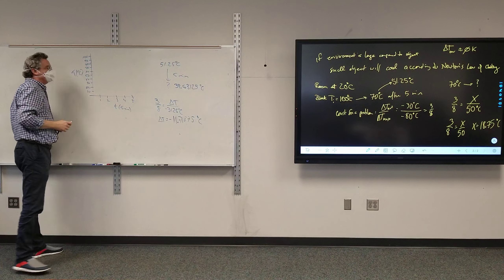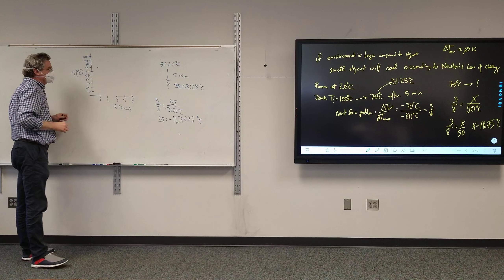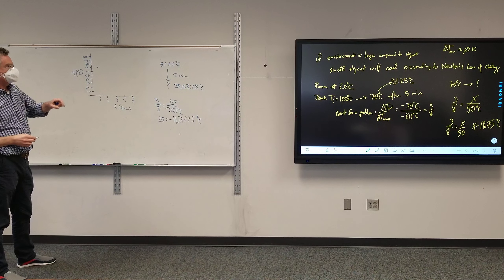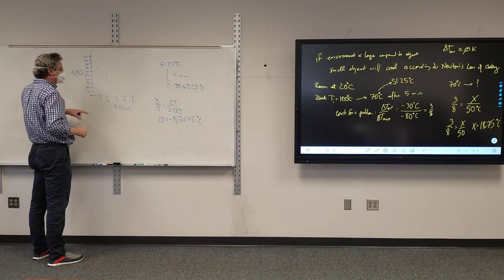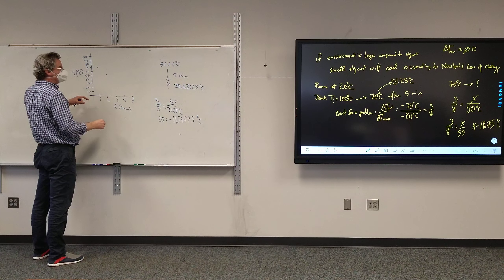All right, so my time is equal to zero, I'm at 100 degrees Celsius. My time is at, after the first five minutes, I'm at 70 degrees. After the second five minutes, I am at 51.25. After the third, I'm at 39.